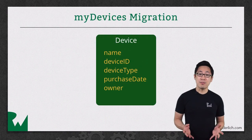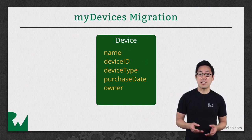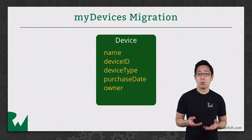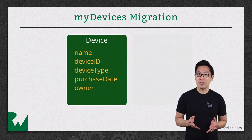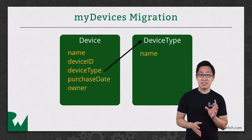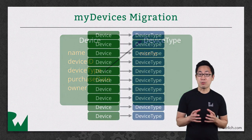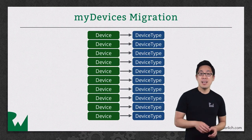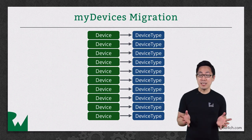In the current My Devices app, each device has a string attribute device type set to something like iPhone or watch. We'll refactor this so that there's a new device type entity, where each device will have a one-to-one relationship with a device type, and the device type will have a to-many relationship to all of its devices.